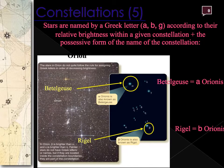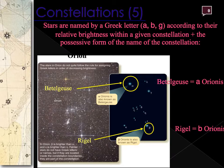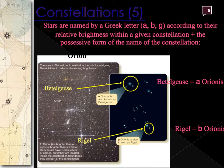Looking at Orion, we can see the glowing red Betelgeuse and glowing blue Rigel. The way we differentiate the brightest stars from fainter stars within a constellation is by Greek letters. Within Orion, the brightest star would be labeled alpha (Orionis) and the next brightest beta, and so on.